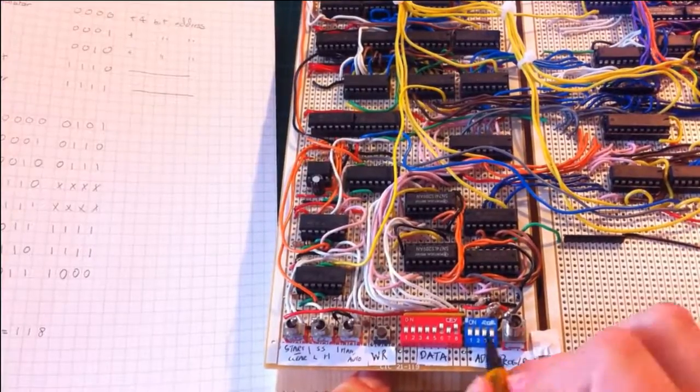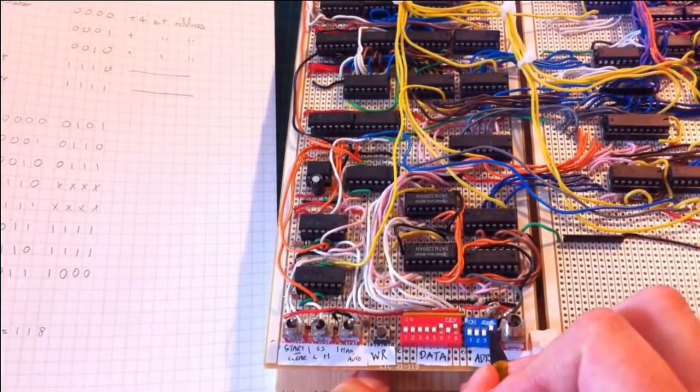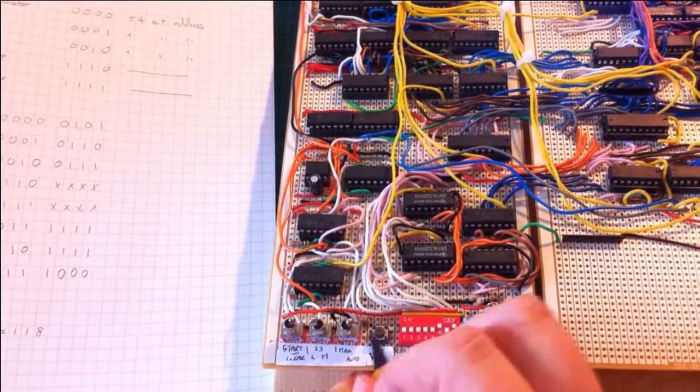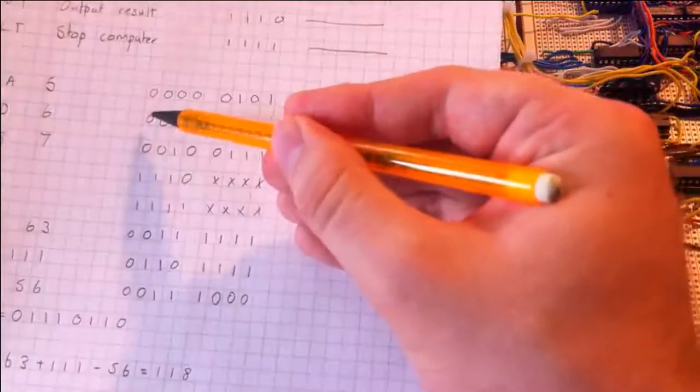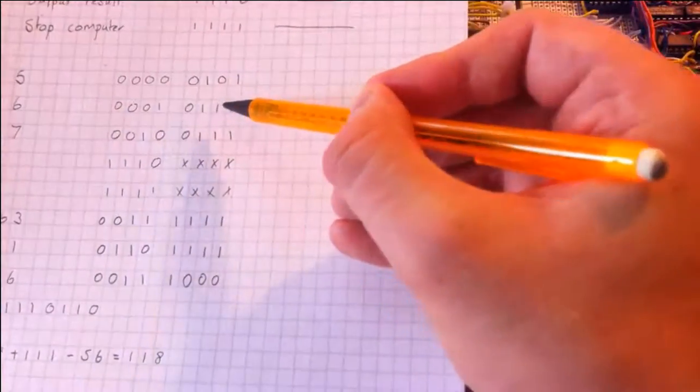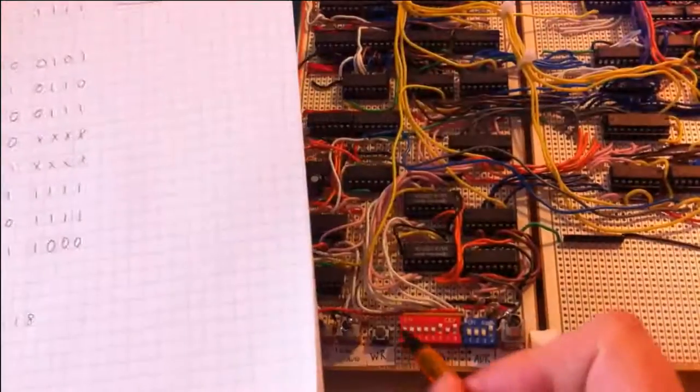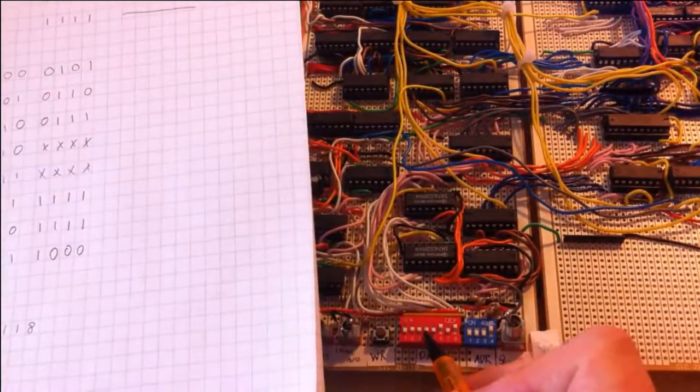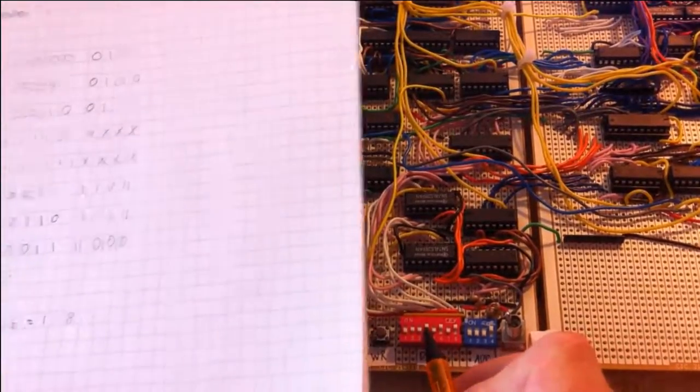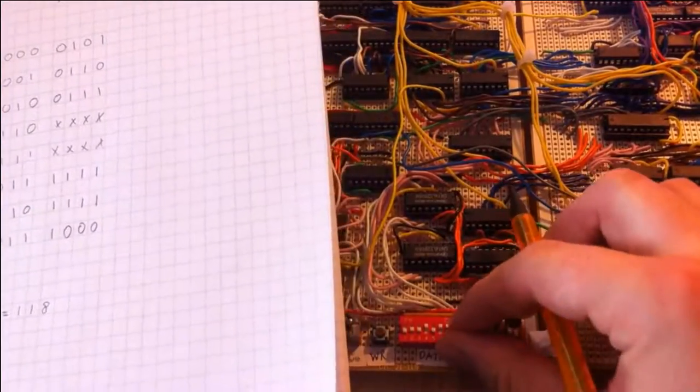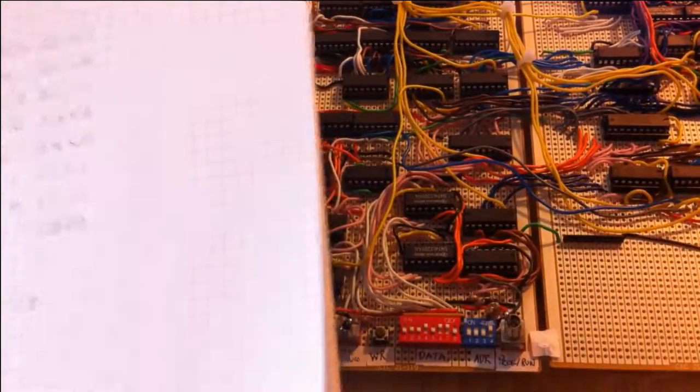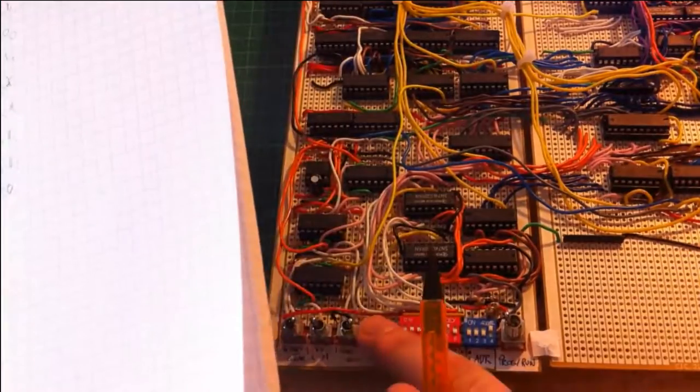Then we can increment the address to 1. And we want to send the command add 6, which as we can see is 00010110. So 00010110, and write.